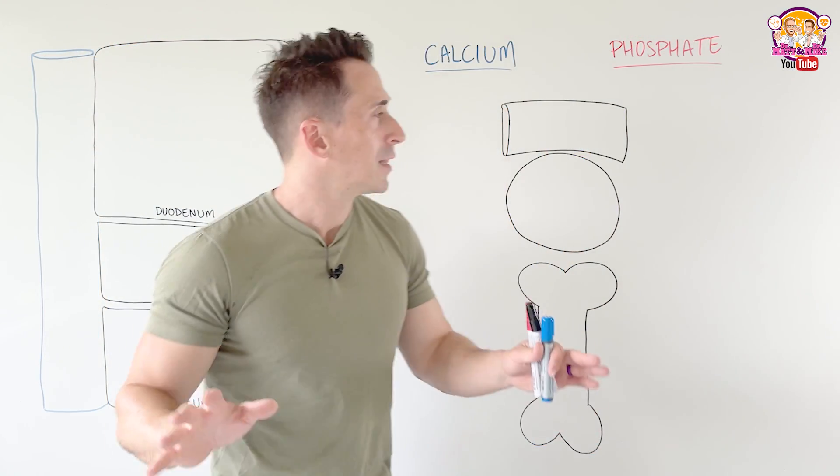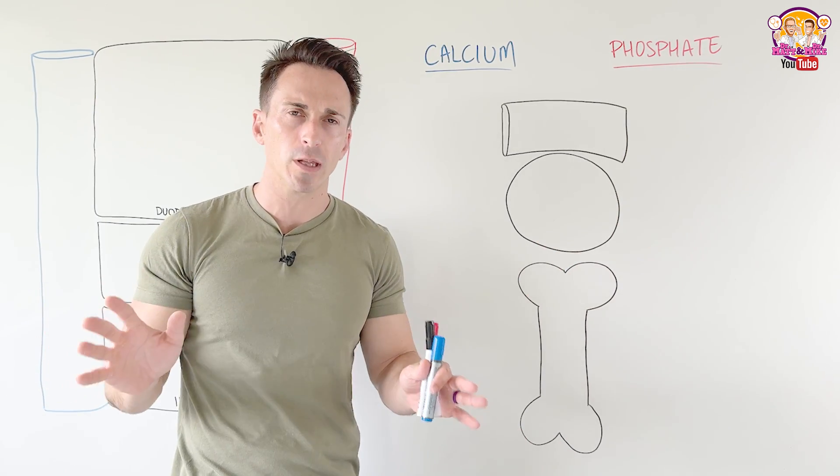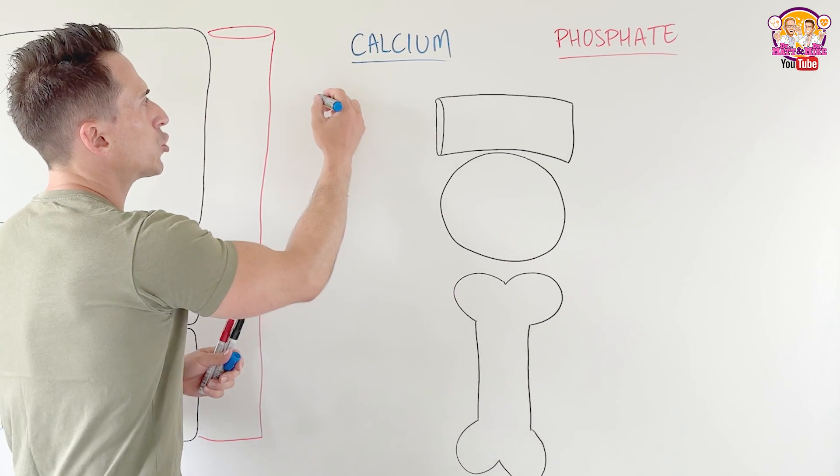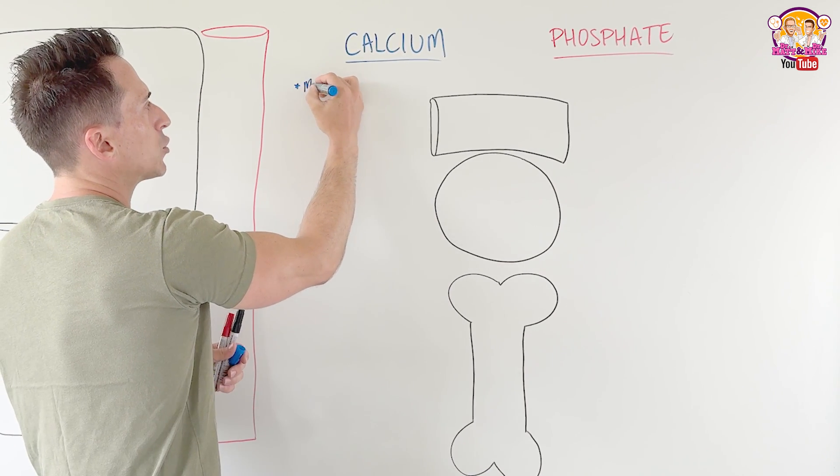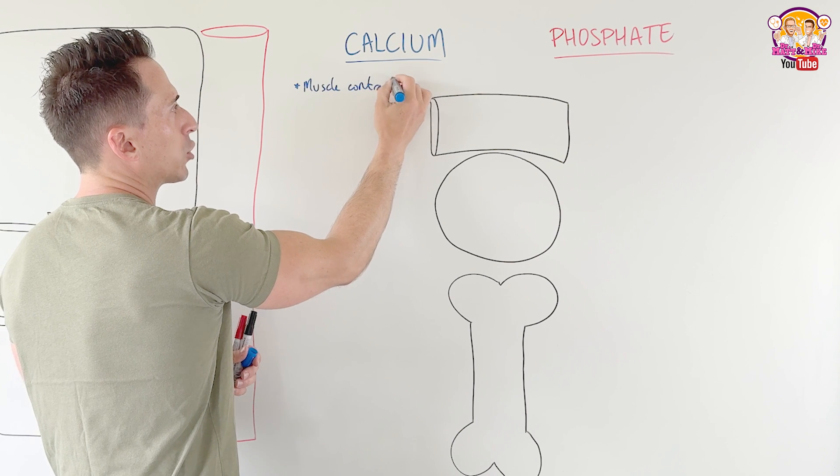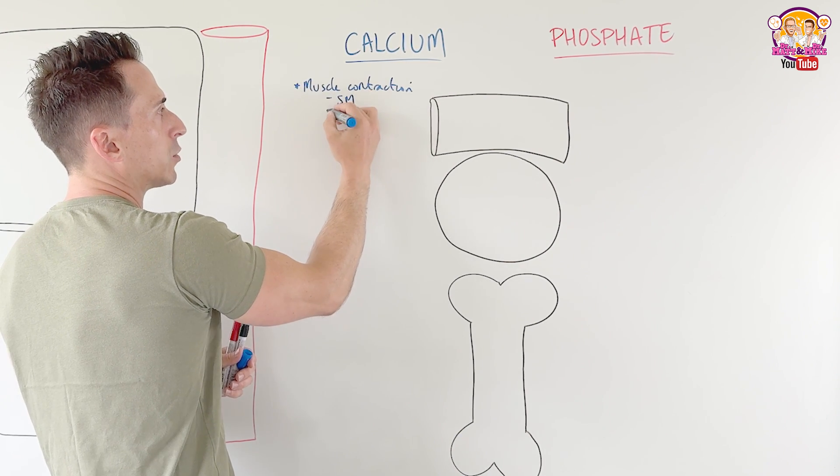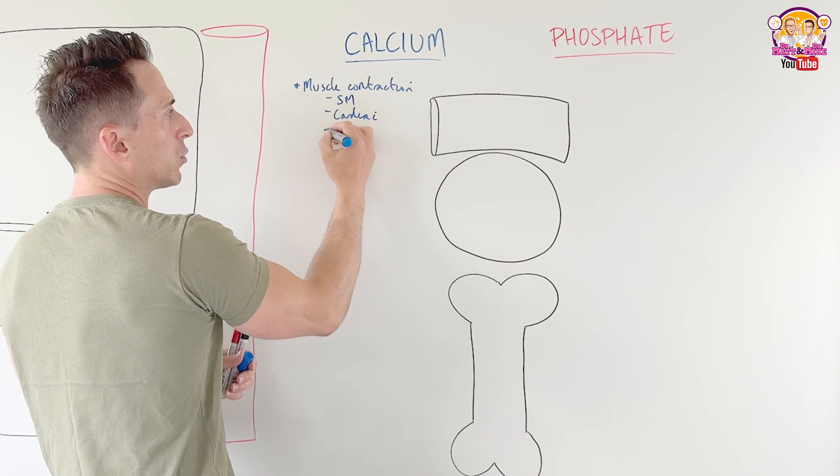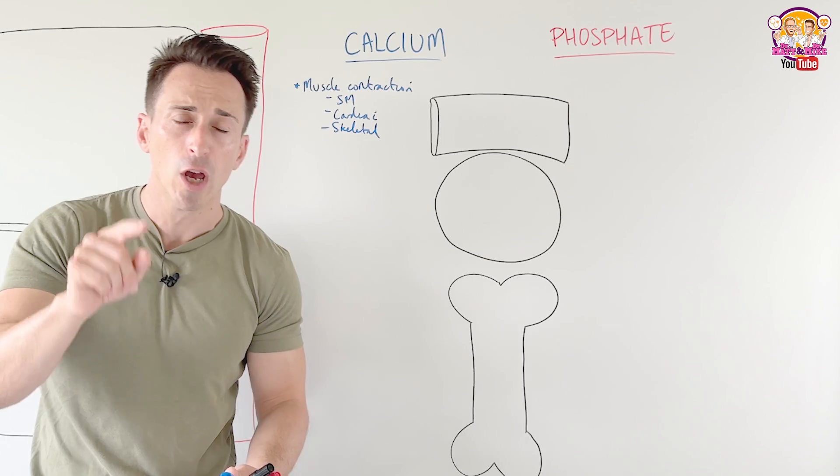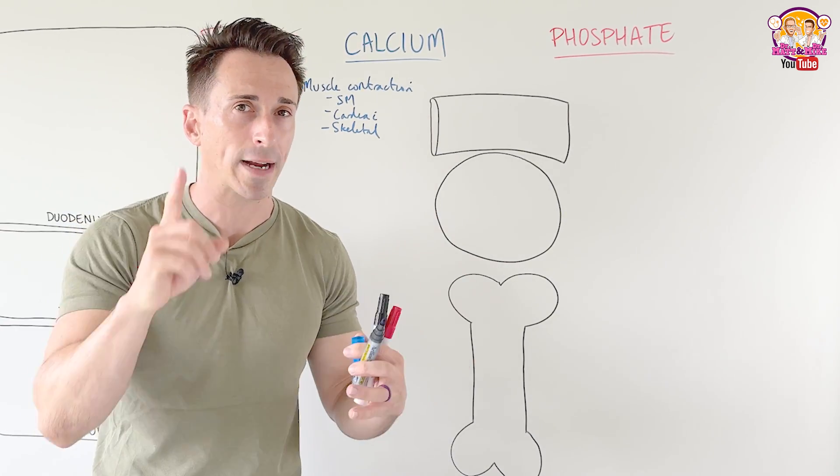To begin, let's talk a little bit about calcium and phosphate and their various roles within the body. So firstly, calcium. Why do we need calcium? Calcium is extremely important when it comes to muscle contraction, and this includes all types of muscle, whether it's smooth muscle, cardiac muscle, or skeletal muscle. When calcium jumps into these muscle cells, those muscle cells will contract. Very important.